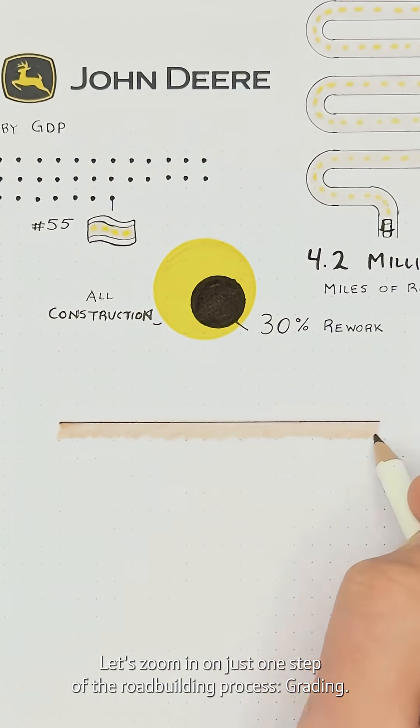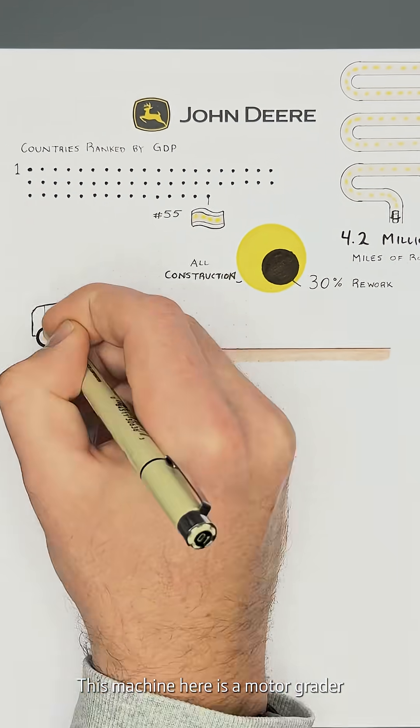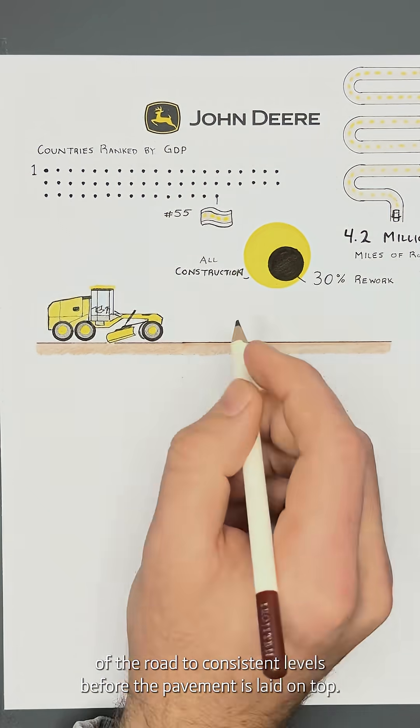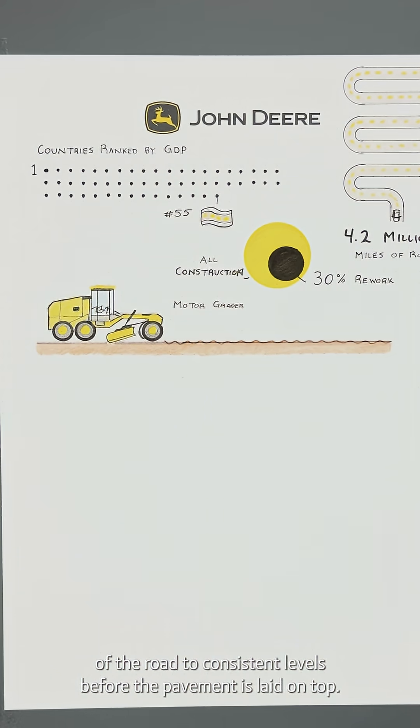Let's zoom in on just one step of the road building process, grading. This machine here is a motor grader, whose primary role on a job is to get the base layers of the road to consistent levels before the pavement is laid on top.